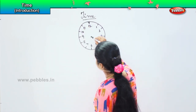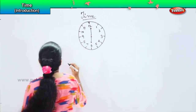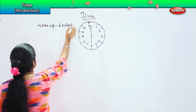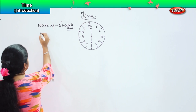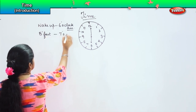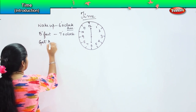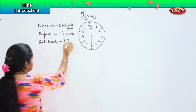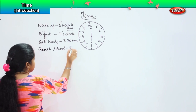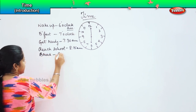What time do you get up in the morning? Assume that you get up at 6 o'clock. Here I am just writing down your schedule. I wake up at 6 o'clock in the morning — I write it as a.m. Then I have my breakfast at 7 o'clock; I drink my milk, I have some snacks. Then I get ready for school by 7:30 a.m. I reach school at 8:15 a.m. Then I have my break at 9:30 a.m.